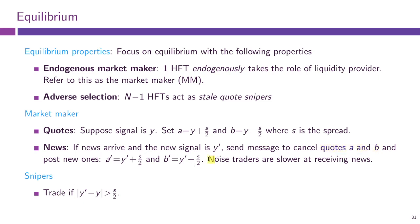Noise traders are assumed to be slower at receiving news. So whenever news arrives, all high-frequency traders get to act first, and all high-frequency traders get access to this news at the same time, so they submit their orders simultaneously. Snipers will trade if there are profits from arbitrage — meaning if the change in y is very small they will probably not trade.